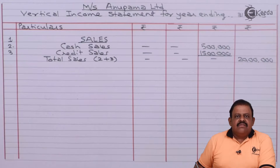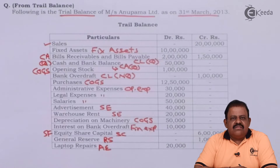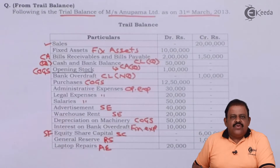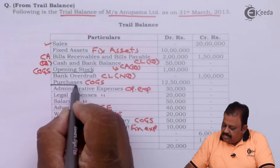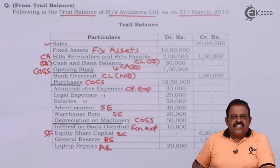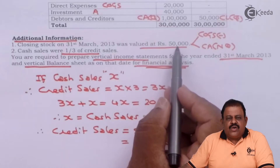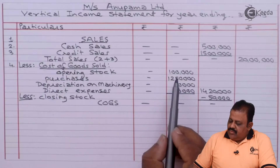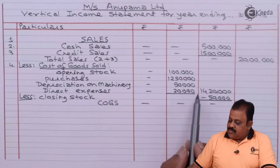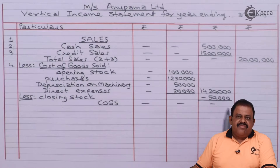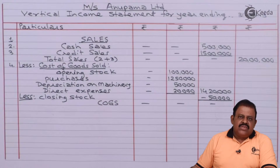From total sales we deduct cost of goods sold. Items for cost of goods sold include: opening stock, purchases, depreciation on machinery (factory expense), and direct expenses — we get 14 lakhs 20,000. From this we deduct closing stock of 50,000. Finally, cost of goods sold is 13 lakhs 70,000.